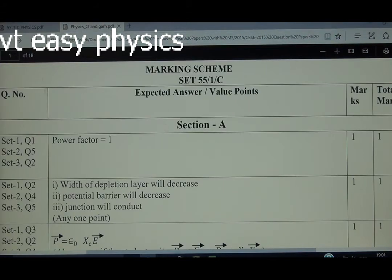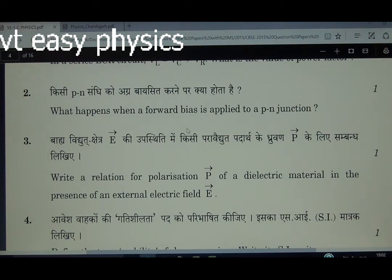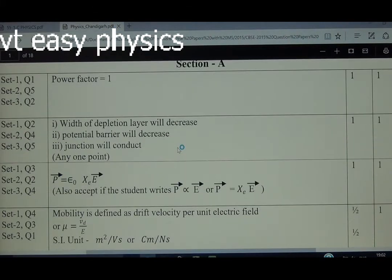Question number 2: What happens when a forward bias is applied to a PN junction? Simple question. We know that when a PN junction diode is forward biased, the depletion layer width decreases and potential barrier decreases.